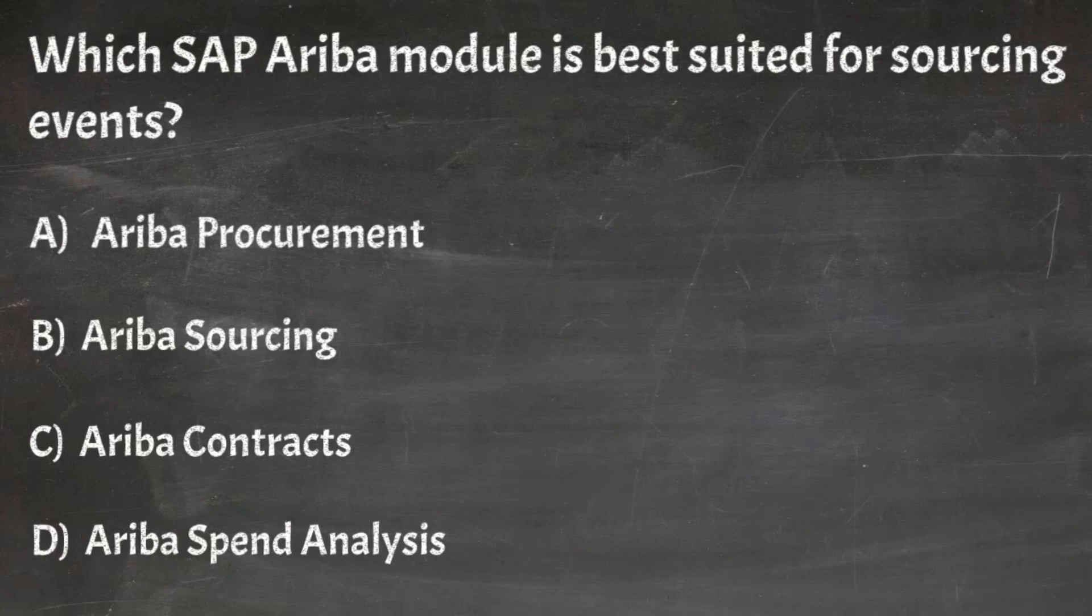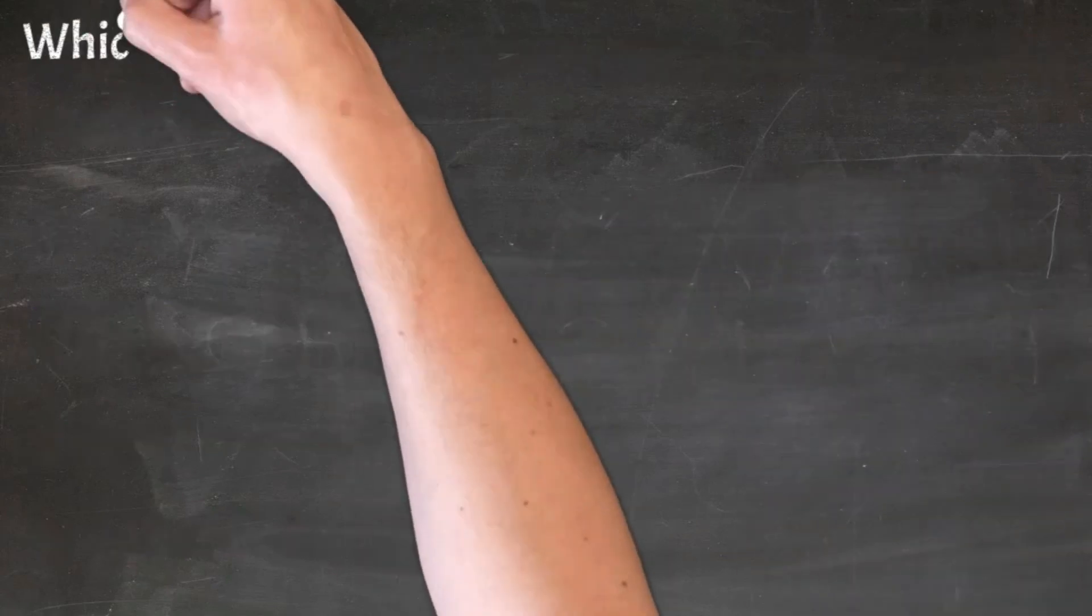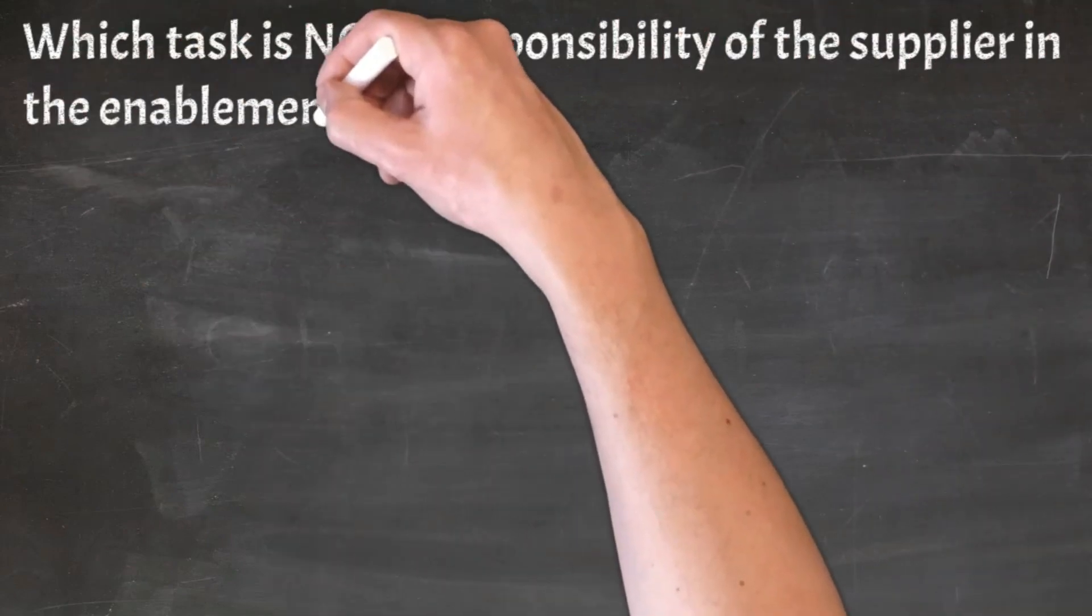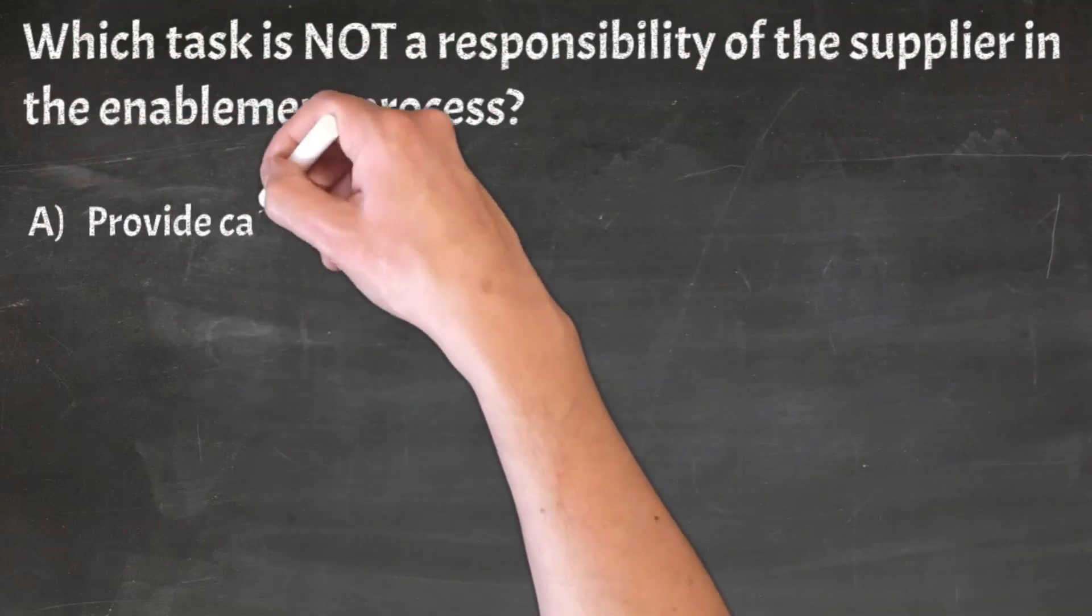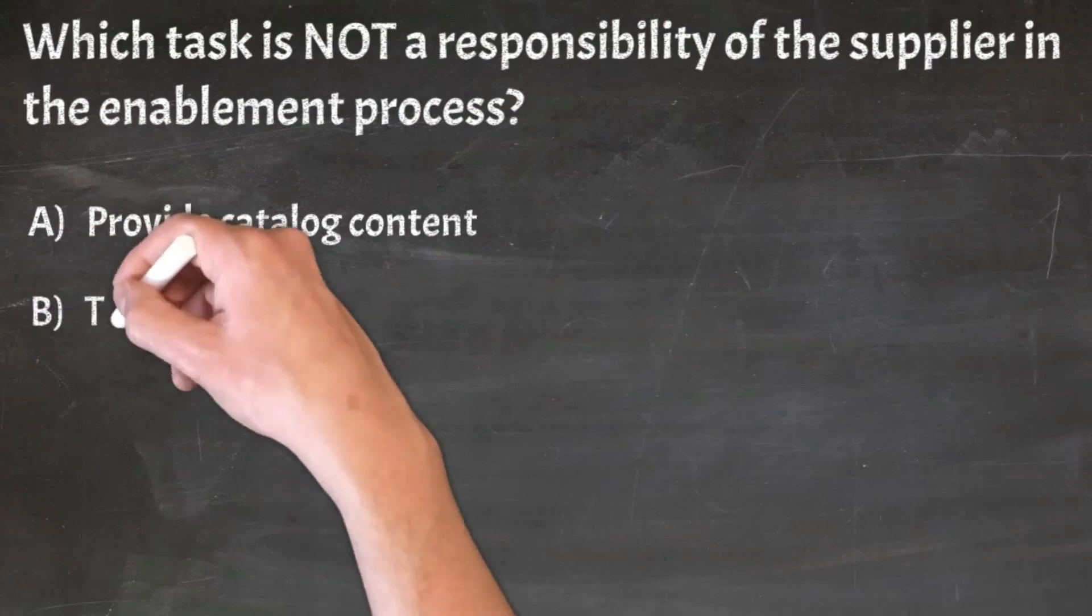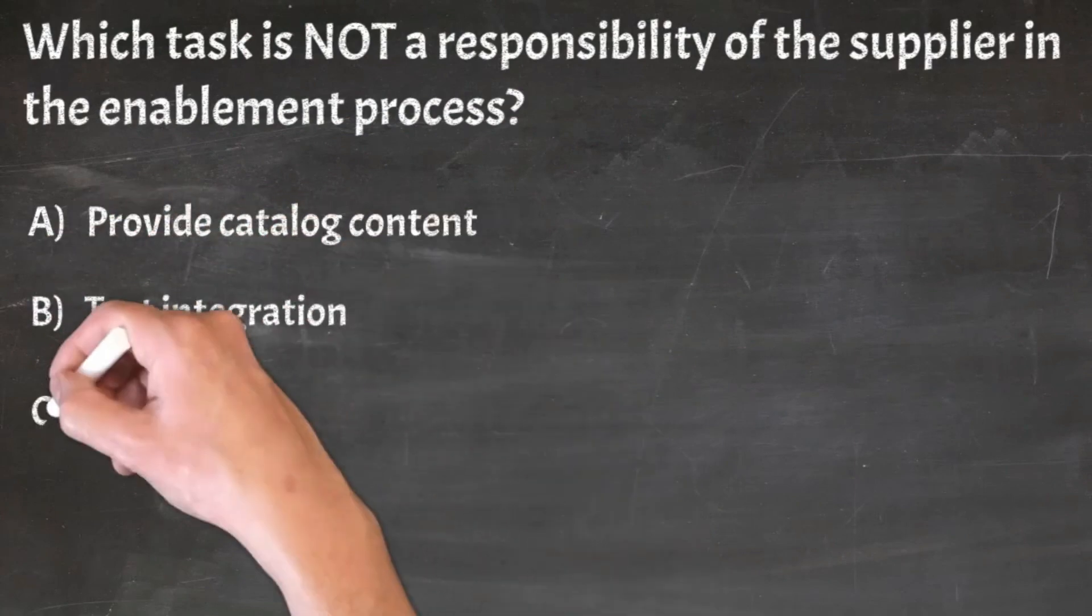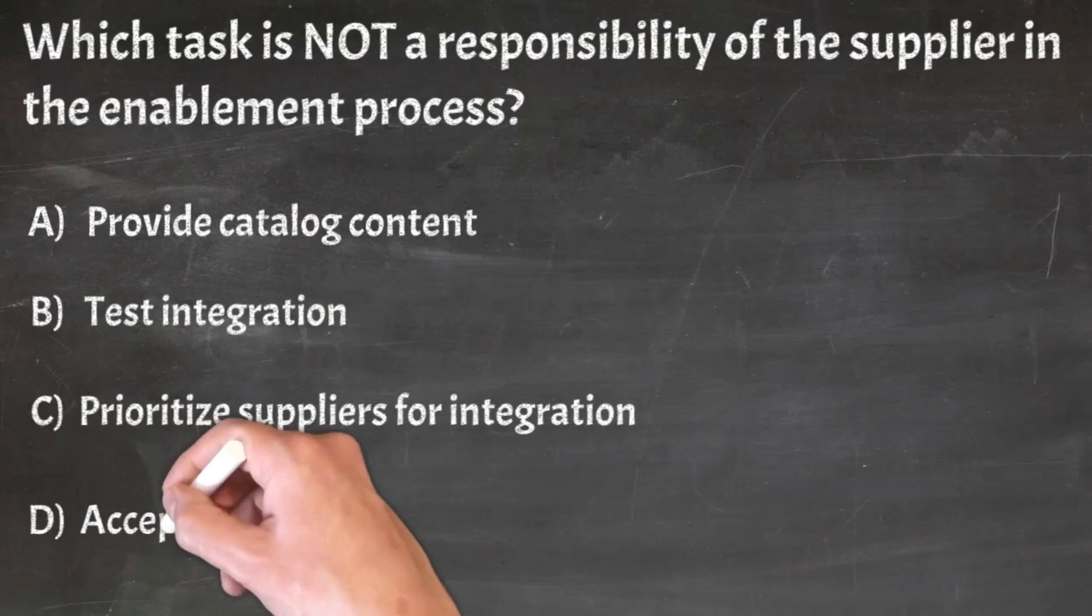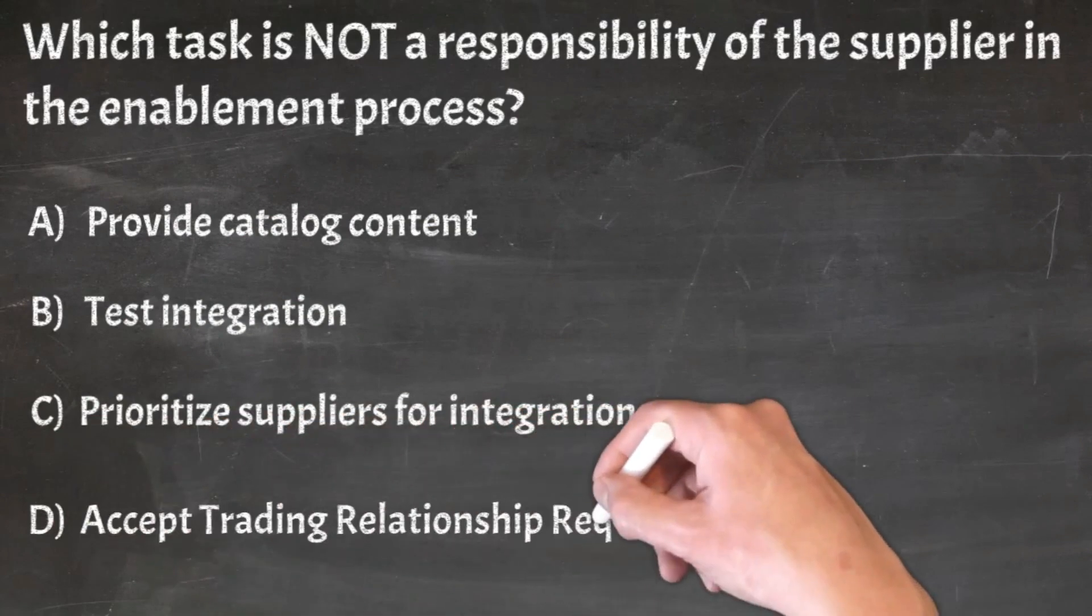Correct answer: B. Ariba sourcing. Question 18: Which task is not a responsibility of the supplier in the enablement process? A. Provide catalog content, B. Test integration, C. Prioritize suppliers for integration, D. Accept trading relationship request.